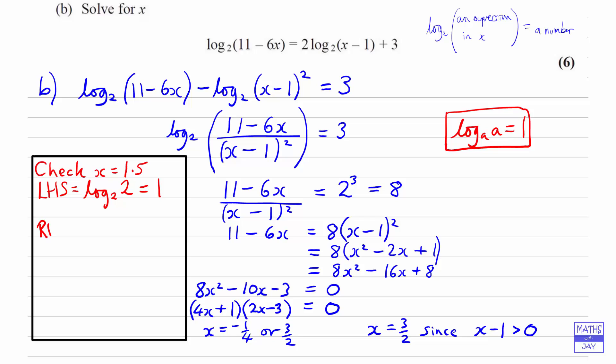So the right hand side, well we've got 2 log to base 2 of, and inside the bracket we've got 1.5 take away 1, or 3 over 2 take away 1. So we've got a half in there. And then we're adding 3.